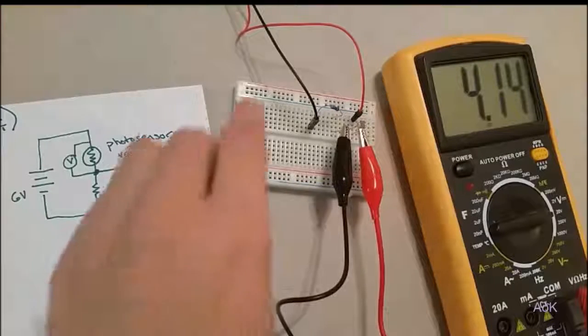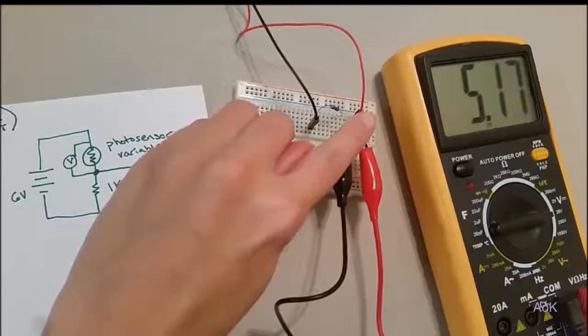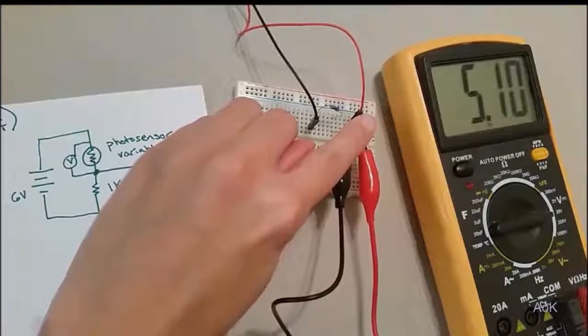What happens if we change the light to even darker? If you cover up the resistor, notice that the voltage drop increased even more.